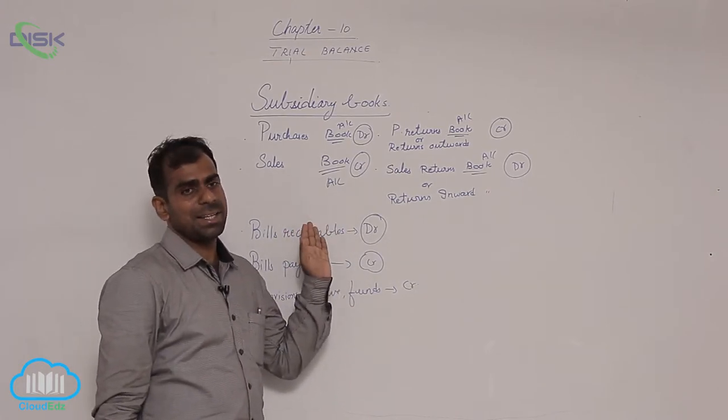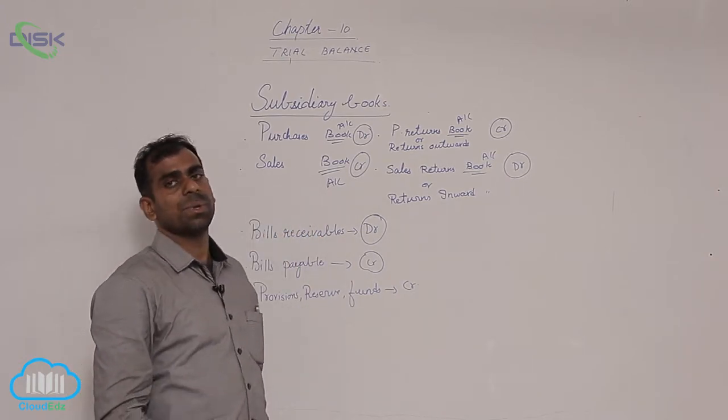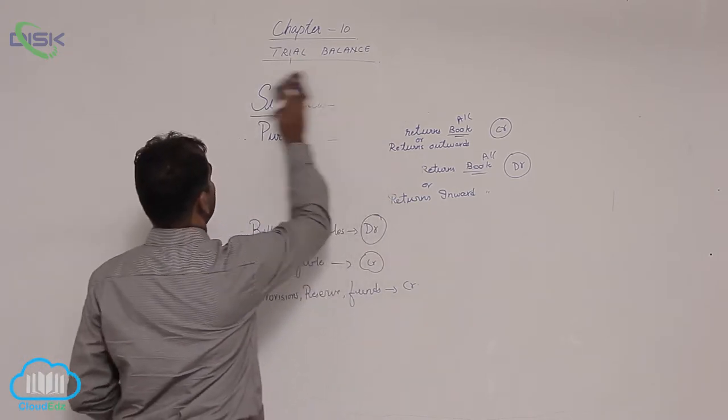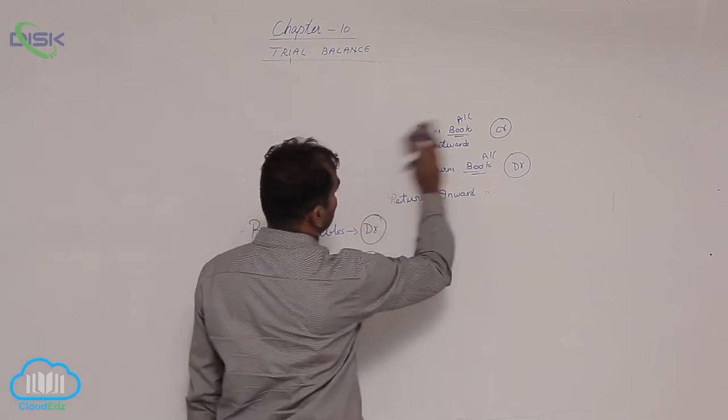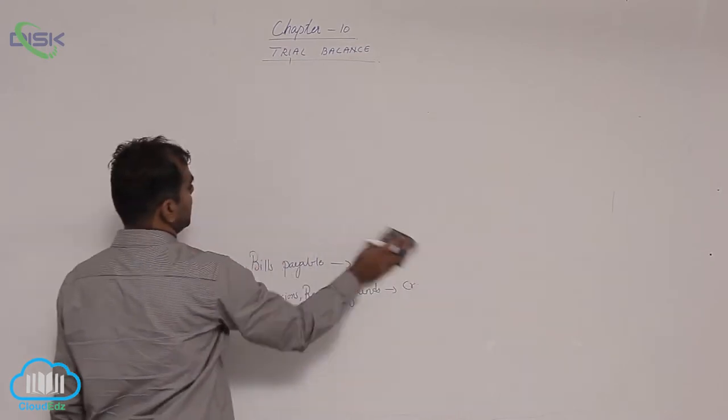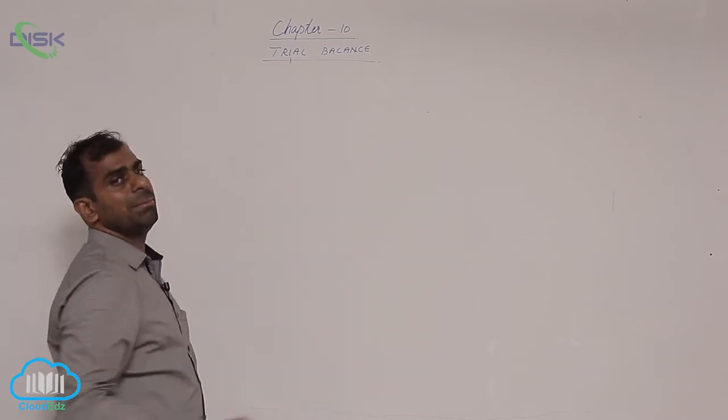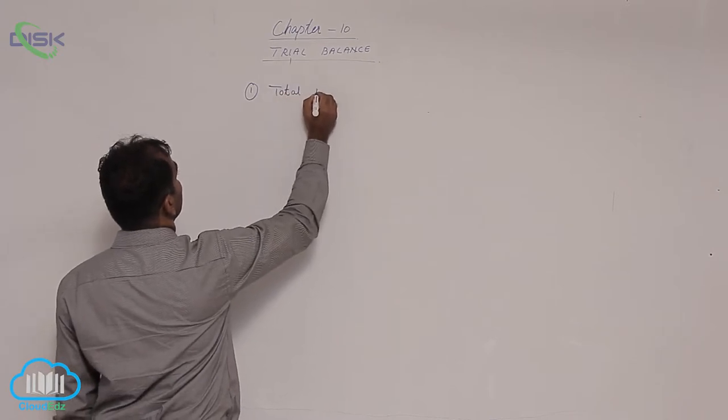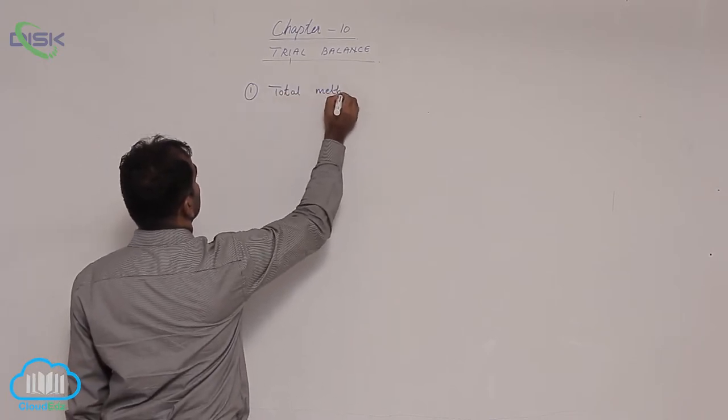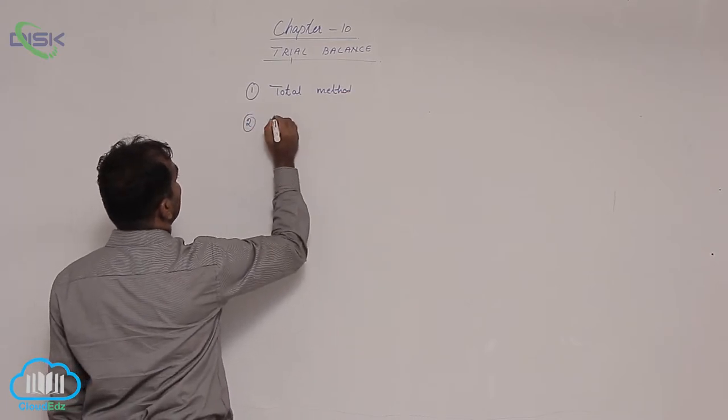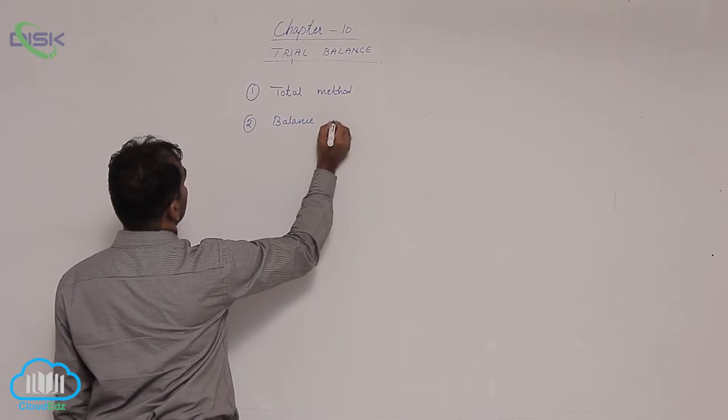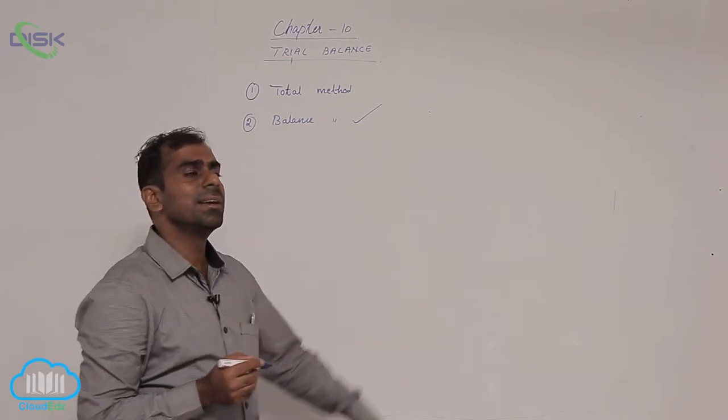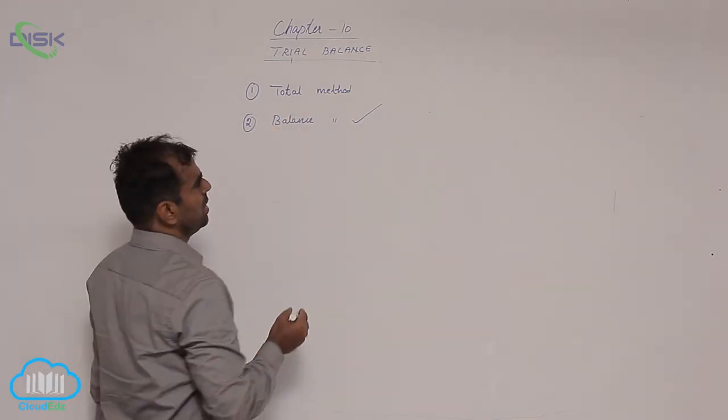We will move on and see how many types of methods are there to prepare trial balance and what are they. What are the different methods of preparing trial balances? Basically, there are two methods. The first method is called total method. The second method is called balance method. Generally this balance method is more popular than this total method.